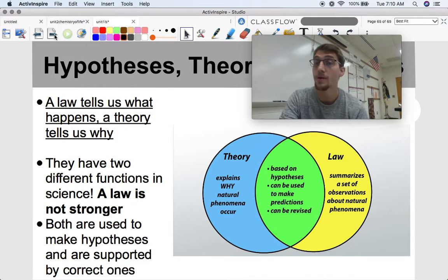So here's that Venn diagram again, summing it all up, and if I were to sum this video up in one sentence, it would be: a law tells us what happens, a theory tells us why. They have two different functions in science, and a law is not stronger. We need to dispel this notion right now and get rid of that misconception that a law is just a proven theory or something like that. Both are used to make hypotheses and are supported by correct ones. A theory explains why natural phenomena occur. A law summarizes a set of observations about natural phenomena that can be used to predict. They're both based on correct hypotheses. They can both be used to make predictions, and both can be revised. A law can be revised too in the light of new evidence. That's important to note as well. All right, that'll be it for this video. Please let me know if you have any questions. We'll see you next time.